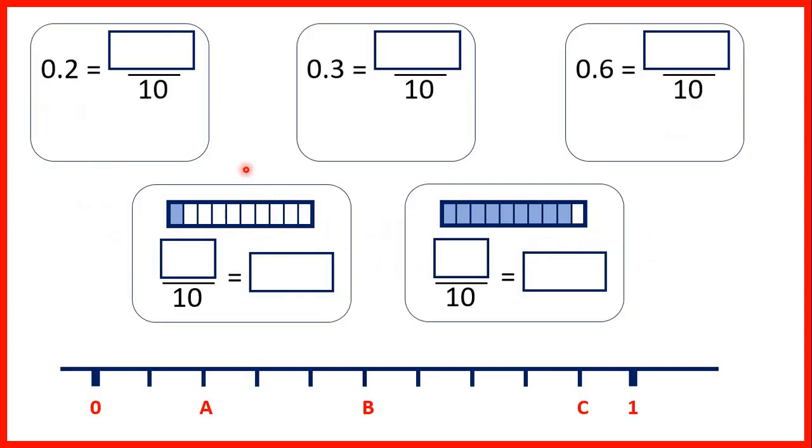So let's look at these questions. 0.2 is equal to how many tenths? Well, we know that the first digit after the decimal point tells us how many tenths we have, so we have two tenths. With 0.3, we have three tenths. And with 0.6, we have six tenths.